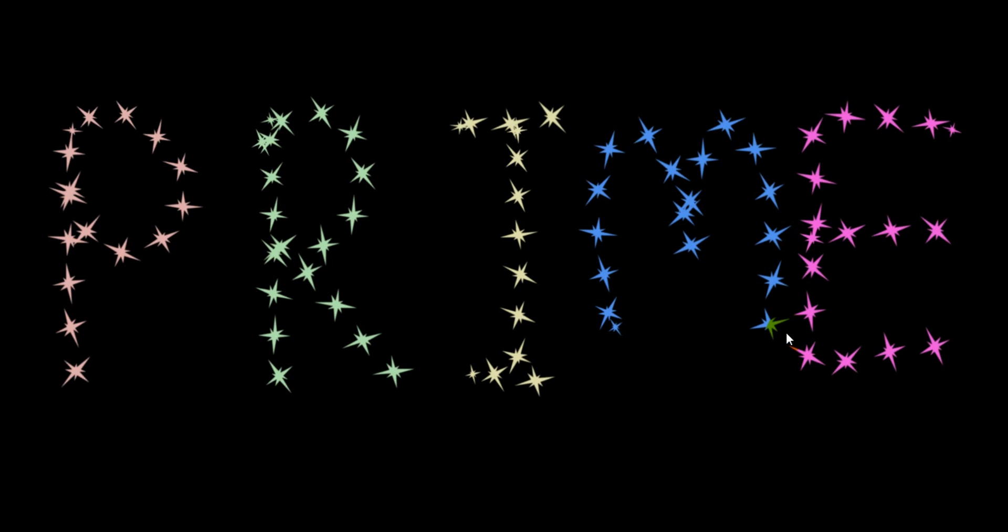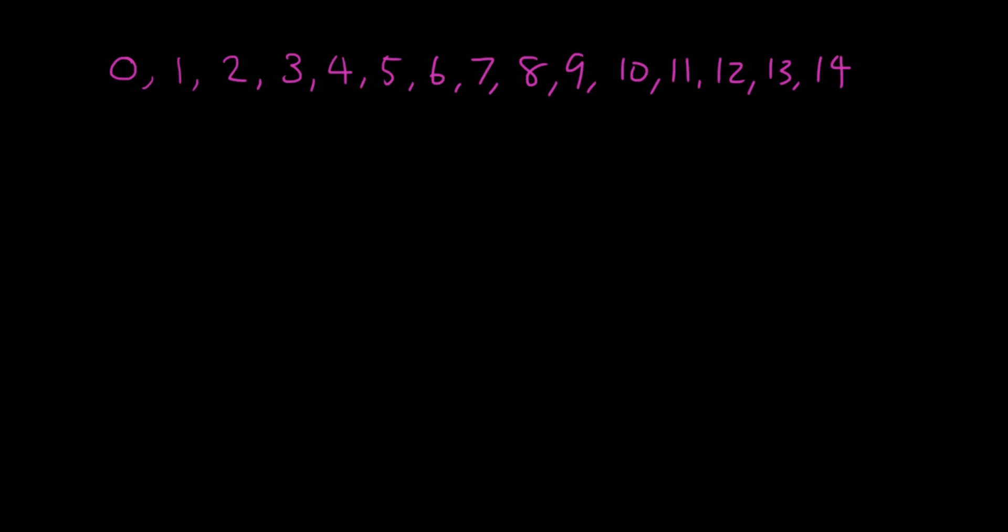So basically if I write out some numbers from 0 onwards, you can see pretty soon that some numbers can be made up from the product of other numbers.